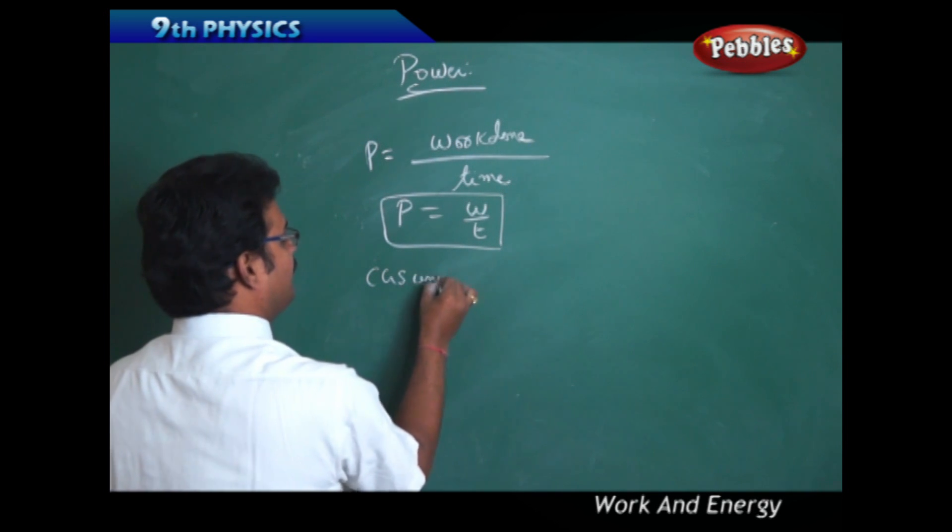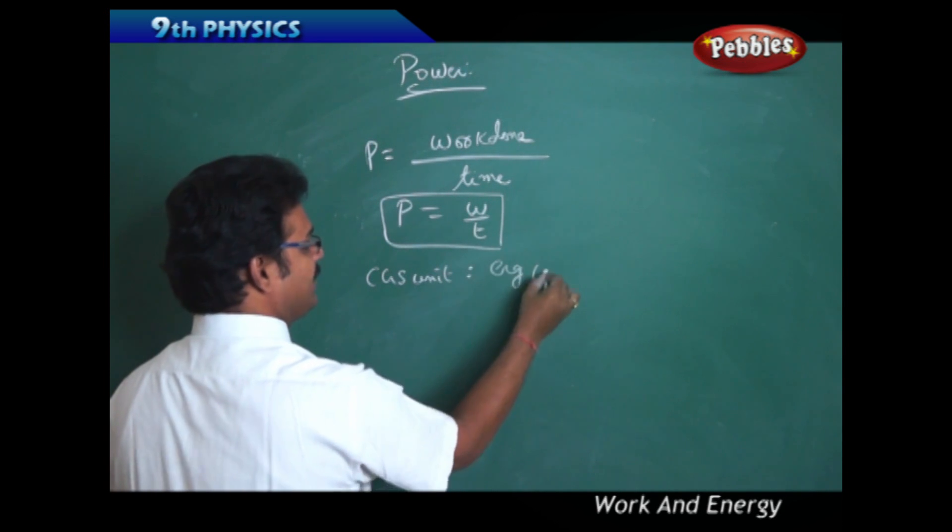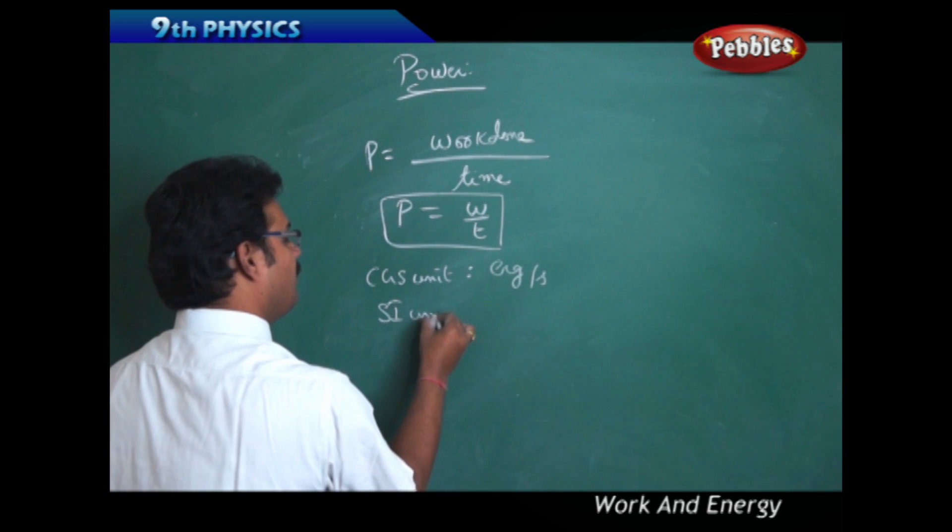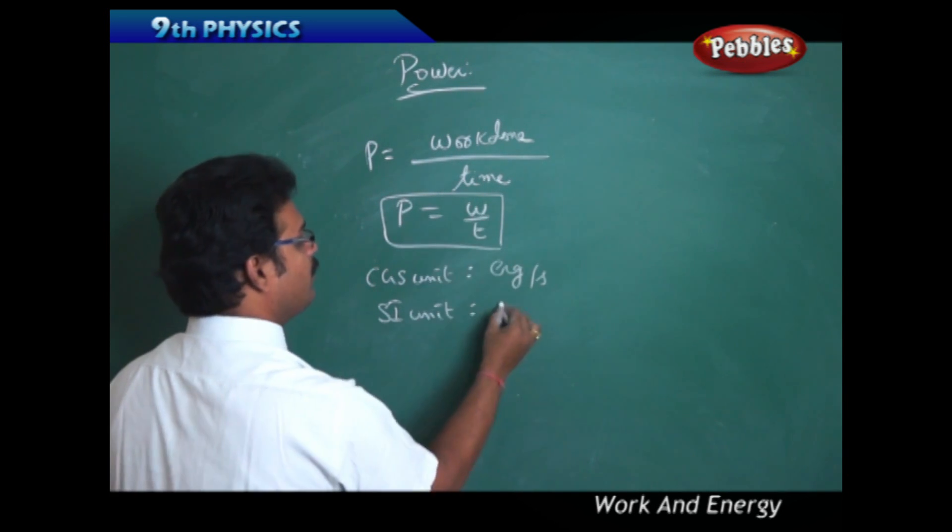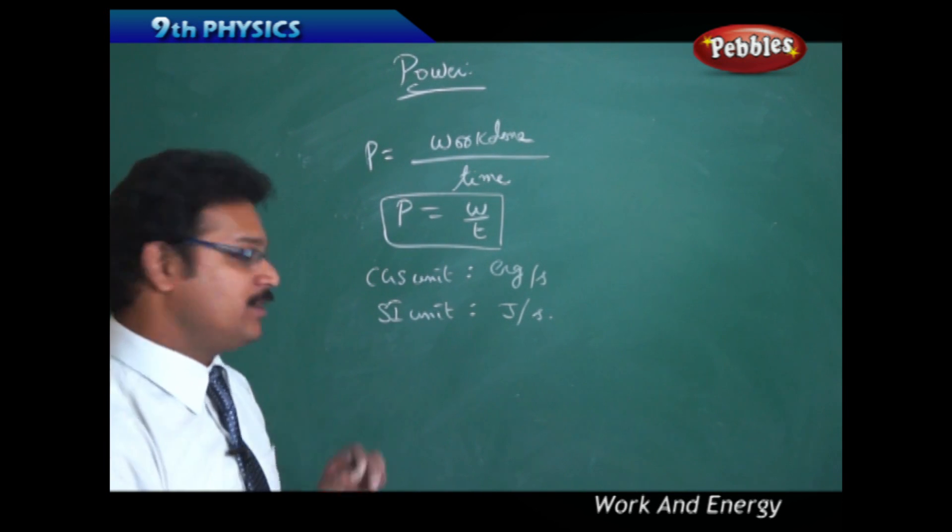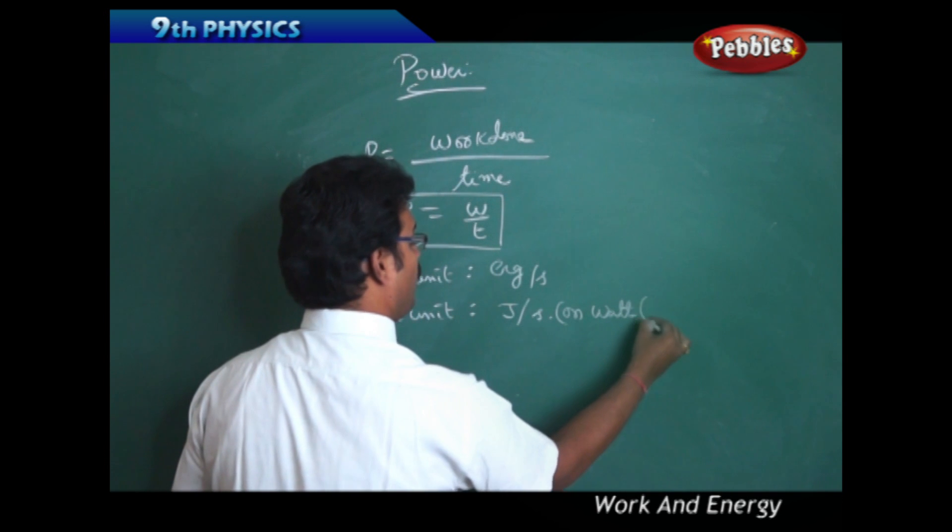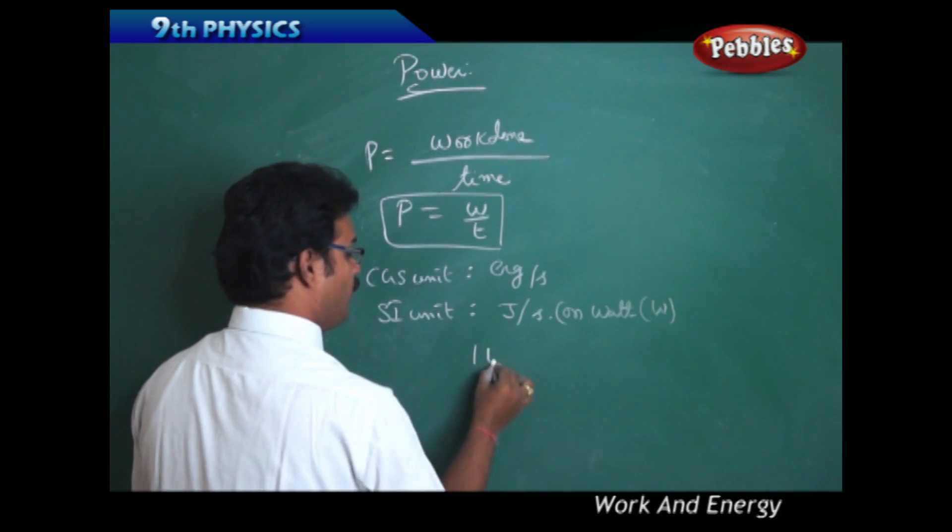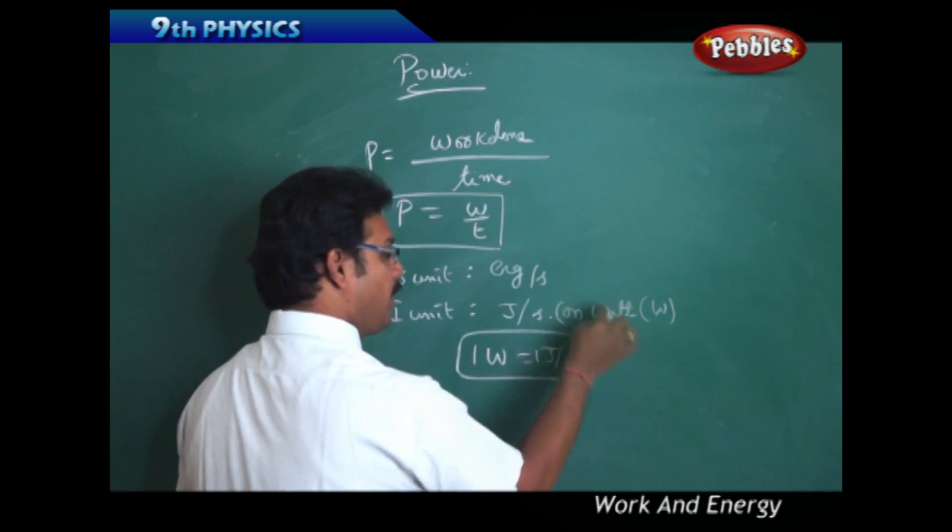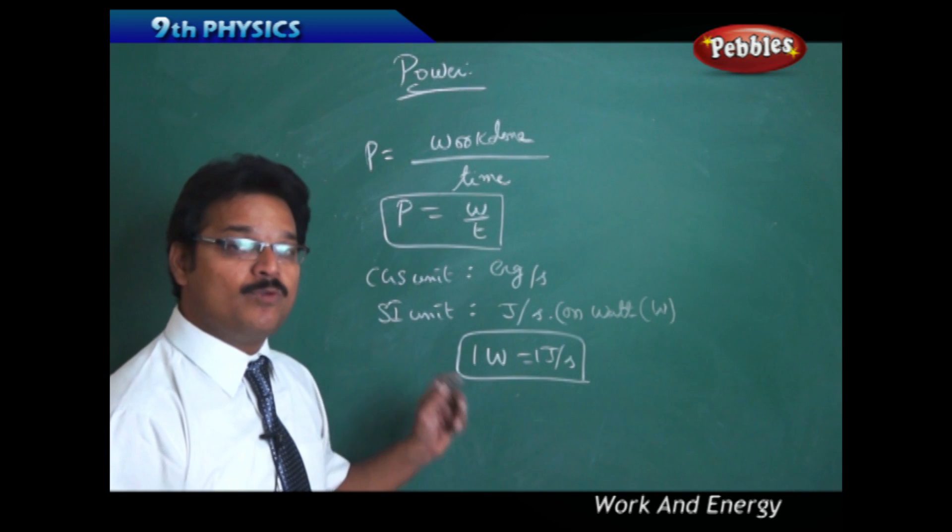The CGS unit of power is erg per second. The SI unit of power is Joule per second, which can also be written as Watt (W). One Watt equals one Joule per second. This unit is named after the great scientist James Watt.